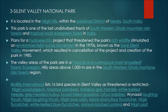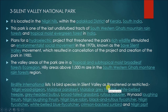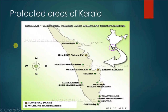Hilly areas above 1,000 metres are in the southwestern Ghats mountain rainforest. BirdLife International lists 16 bird species in Silent Valley as threatened and restricted-range. Out of all these, the Nilgiri pipit was in the news, so always remember that Nilgiri pipit is related to Silent Valley National Park.